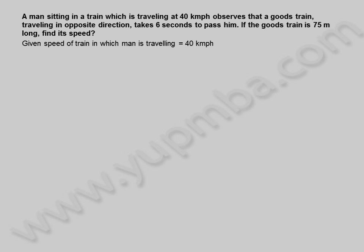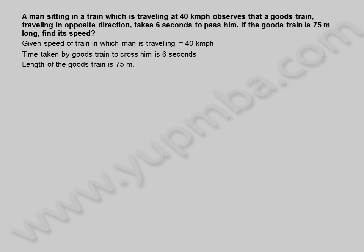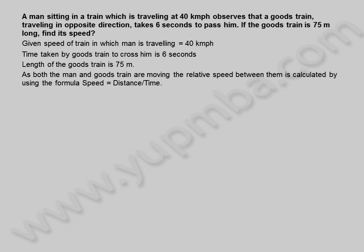Given: speed of train in which man is traveling is equal to 40 kilometers per hour. Time taken by goods train to cross him is 6 seconds. Length of the goods train is 75 meters.